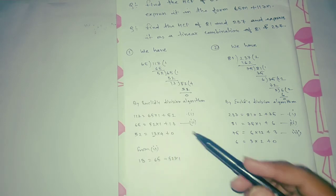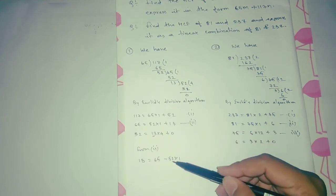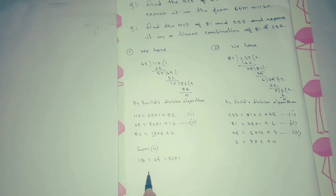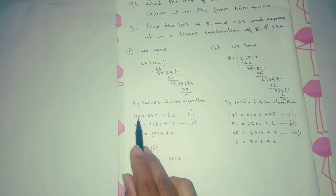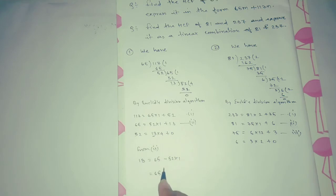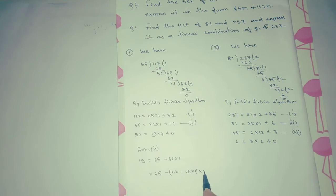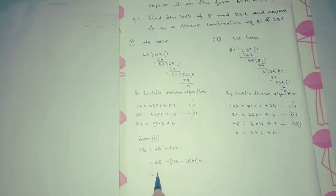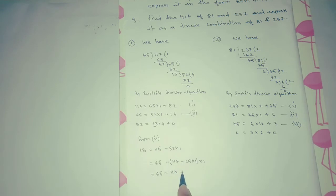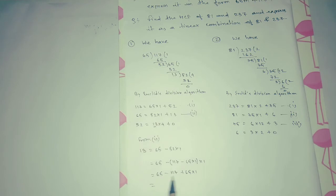Next step: replace the remainder 52. From equation one, 52 can be written as 117 − 65 × 1. So instead of 52, we write 117 − 65 × 1. Expanding: 13 = 65 − (117 − 65 × 1) × 1, which gives 65 + 65 × 1 = 65 × 2, and minus 117 × 1.